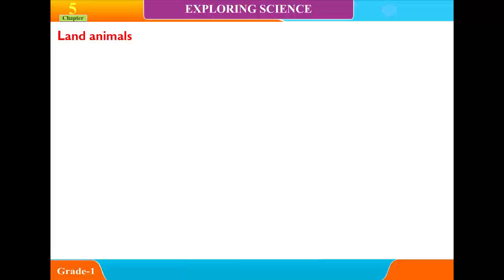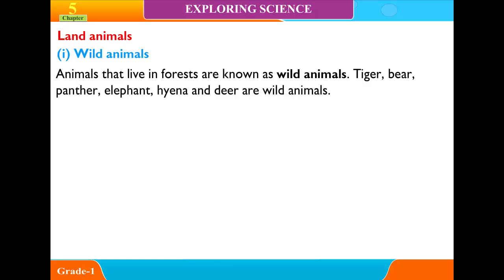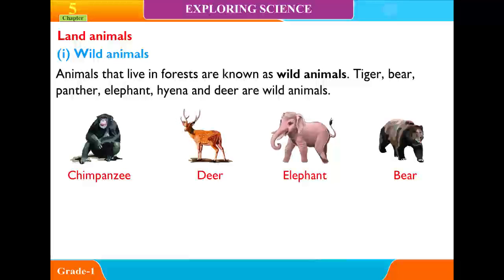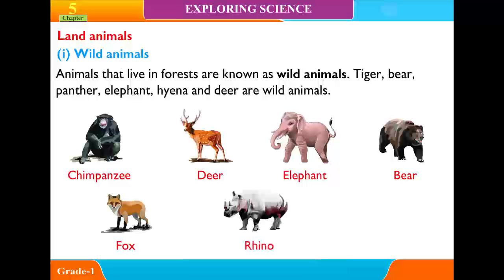Land Animals: First, Wild Animals. Animals that live in forests are known as wild animals. Tiger, Bear, Panther, Elephant, Hyena and Deer are wild animals. Other examples include Chimpanzee, Fox, Rhino, and Orangutan.